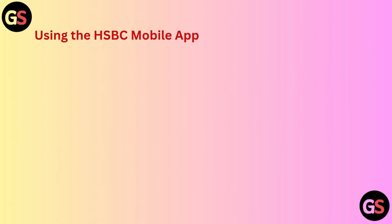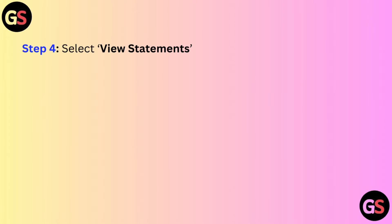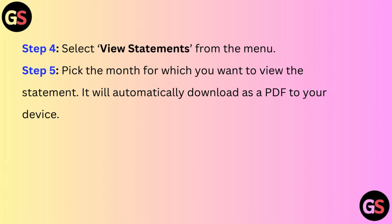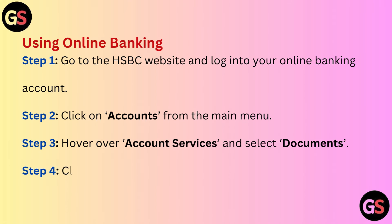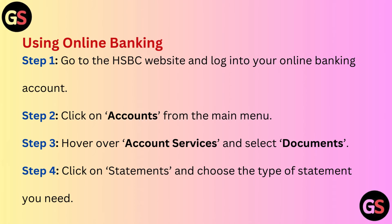Step 3, tap on the 'View More' option. Step 4, select 'View Statements' from the menu. Step 5, pick the month for which you want to view the statement — it will automatically download as a PDF to your device.